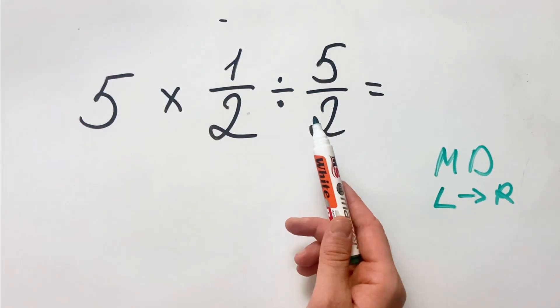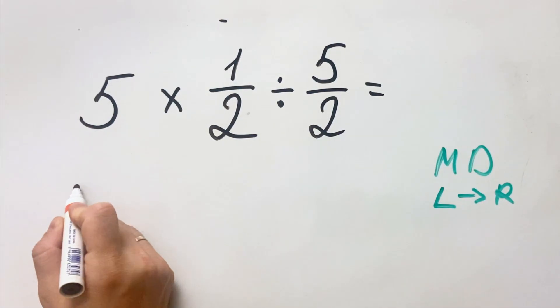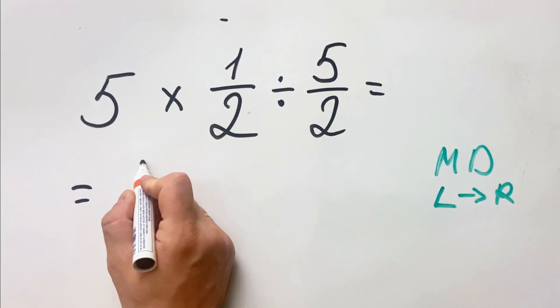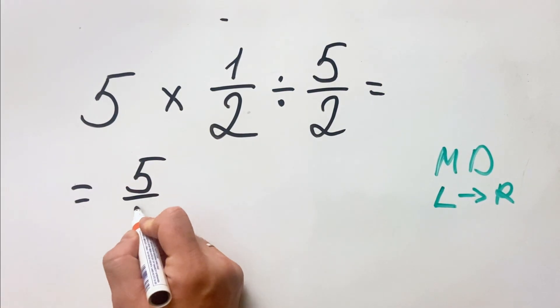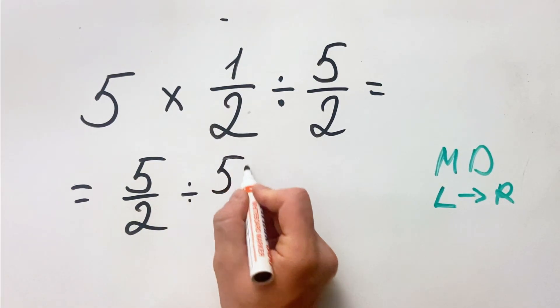In this way you can be sure that you'll get the correct answer. Let's see what we have here. 5 multiplied by 1 over 2 we can write as 5 over 2, and then we have divided by 5 over 2.